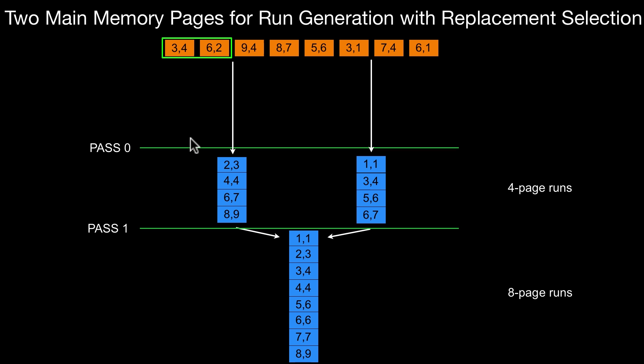So in replacement selection, the effect we see is, even though we have only two pages of main memory available for sorting, the runs that we generate are on average four pages long. And that's a very surprising effect. So there's no guarantee on that. That just happens on average. However, it has that effect that the runs get larger.